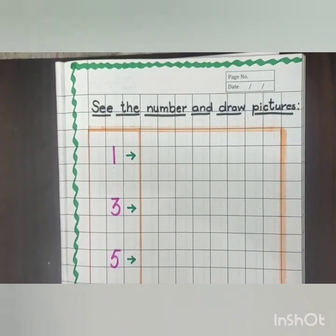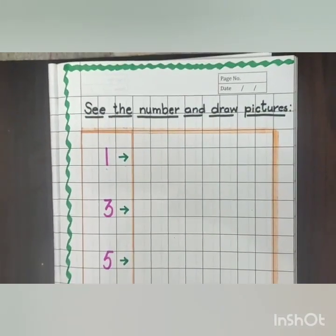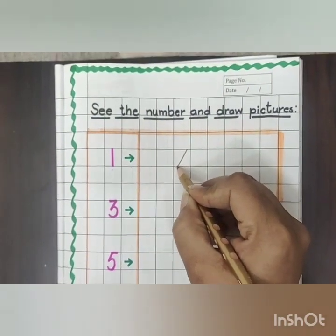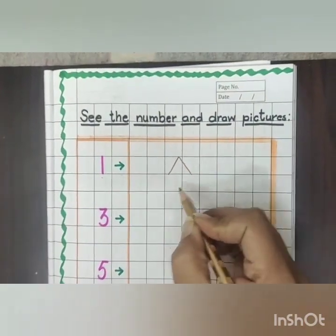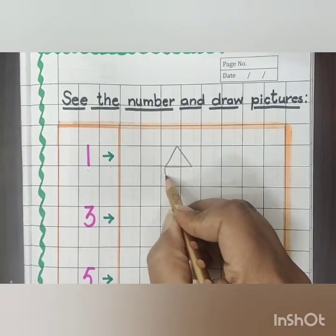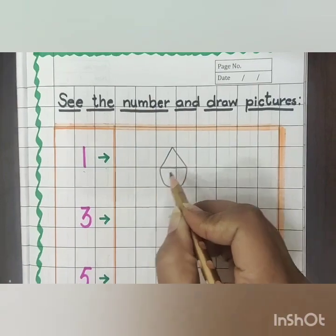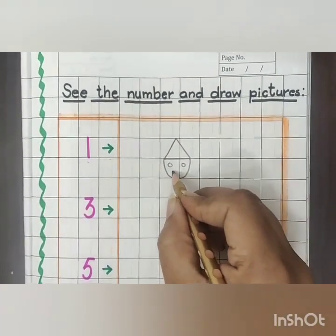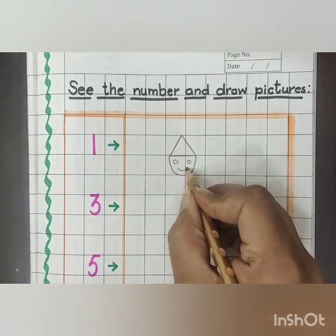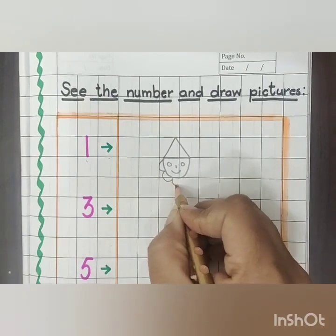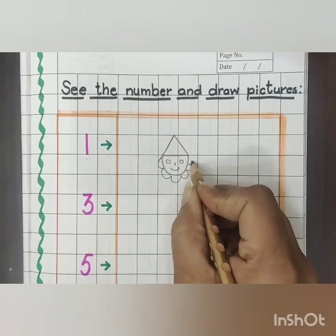So I am drawing a joker face. At first I will make a small triangle, its face, two little eyes, one smile, one little nose, and its dress.